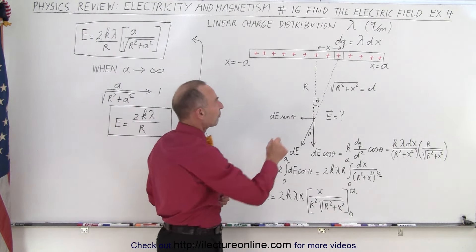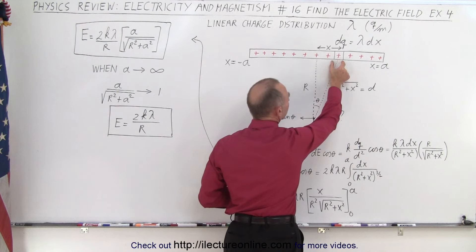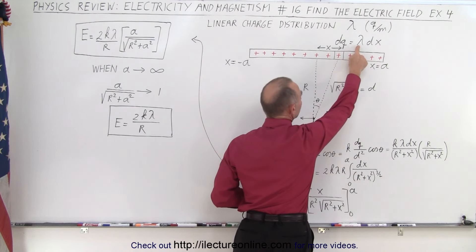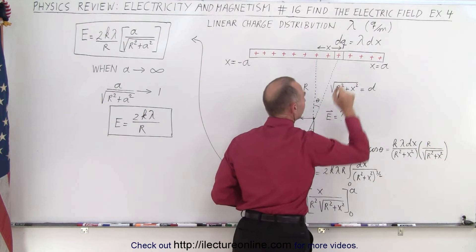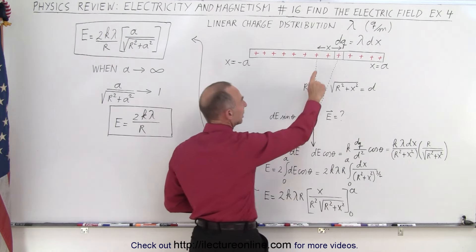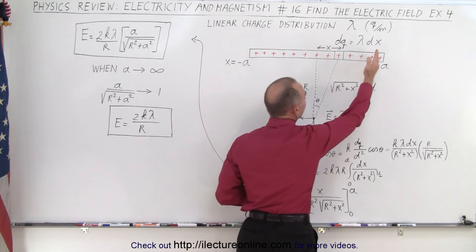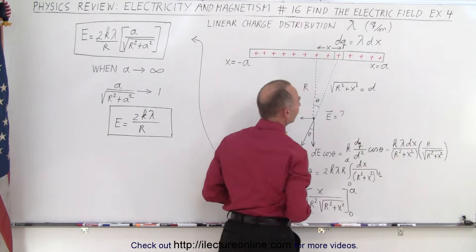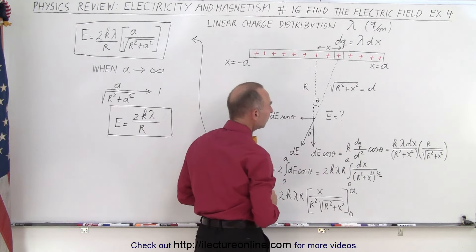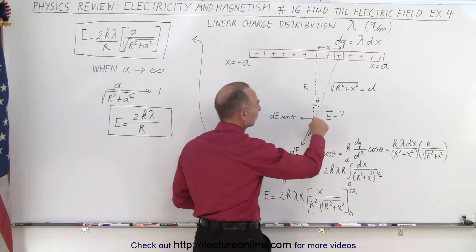So what we need to do is first define a small dq, and that dq is equal to the linear charge density λ times the small dx. Then we're going to integrate all the way from zero to the endpoint, let's call that distance a away from the midpoint here.